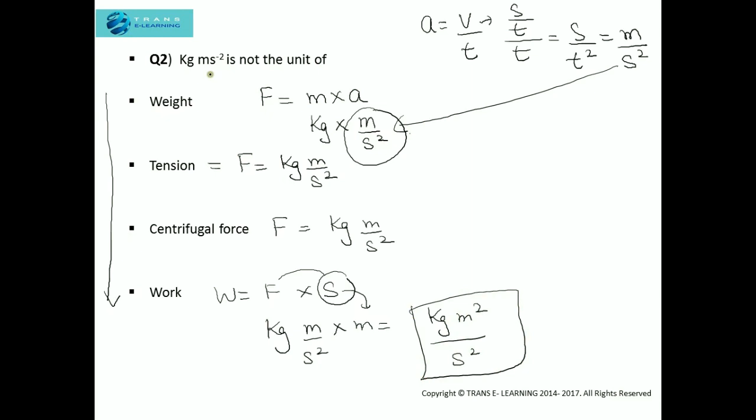So we need to know what kg meter per second squared is not a unit of. Weight has this unit, tension has this unit, and centrifugal force has this unit. The one that doesn't have the unit kg meter per second squared is work. So the answer is work.